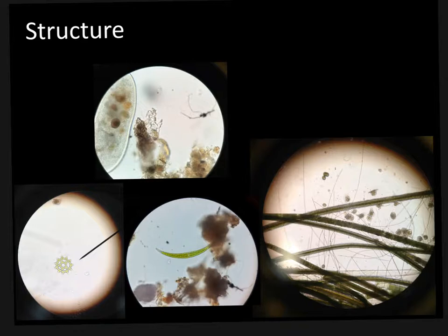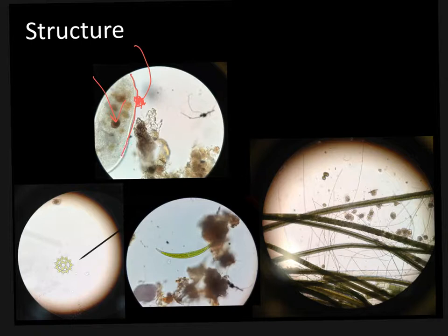For the single cell, we have here our paramecium, and you can actually see different organelles visible inside. On the outside, you have something called a pellicle — this ring right here — and it actually acts like a coat of armor. It prevents the protist from being pierced or hurt. It's like a cell membrane for the actual organism.